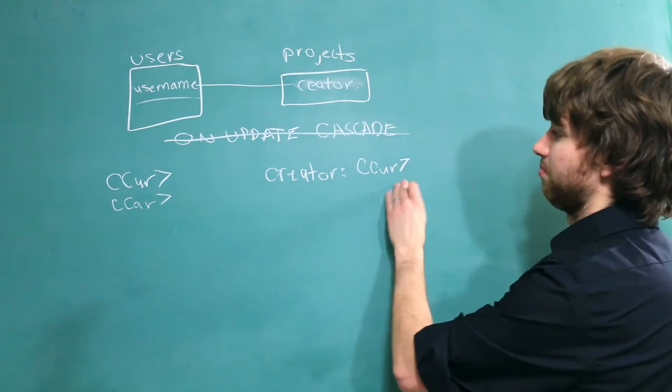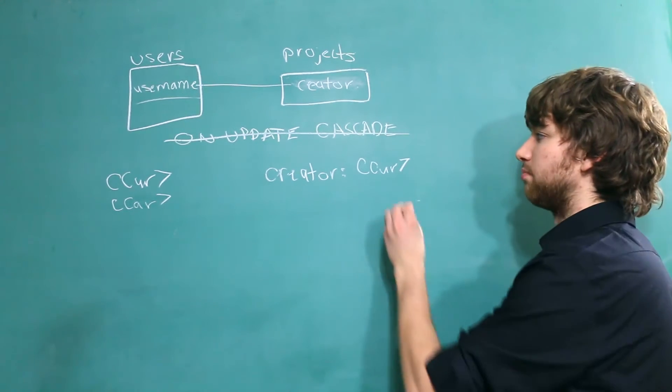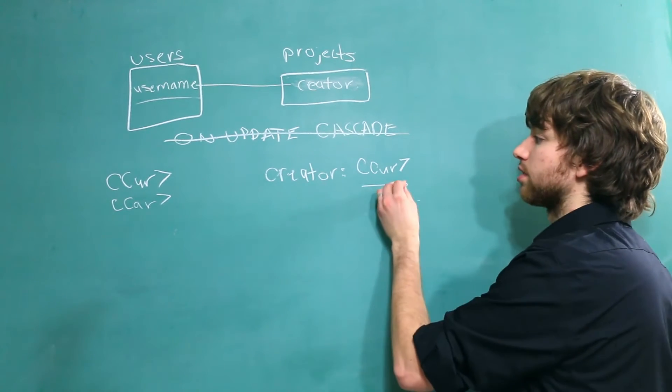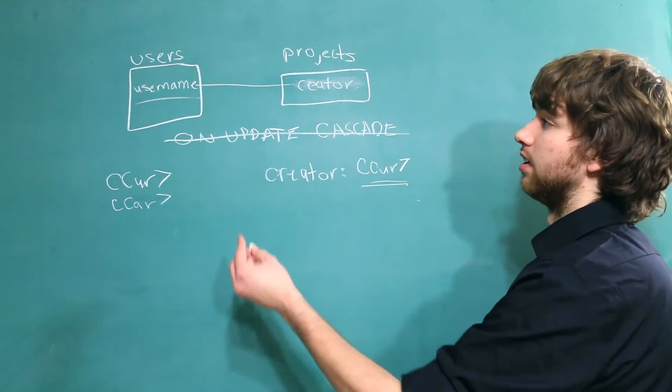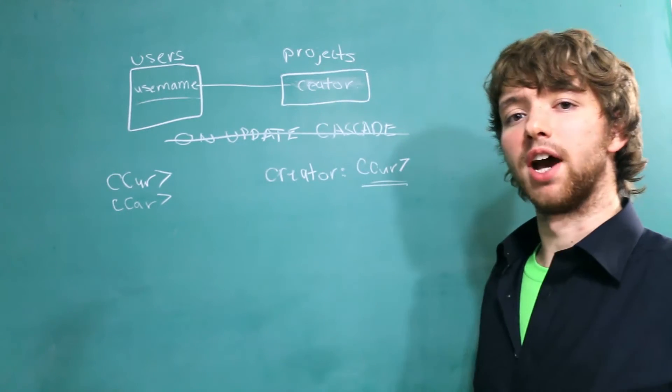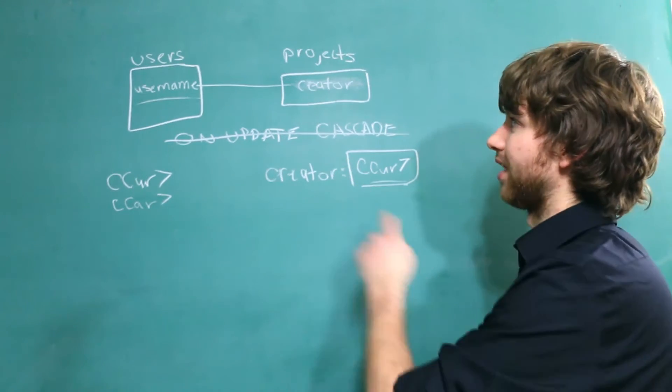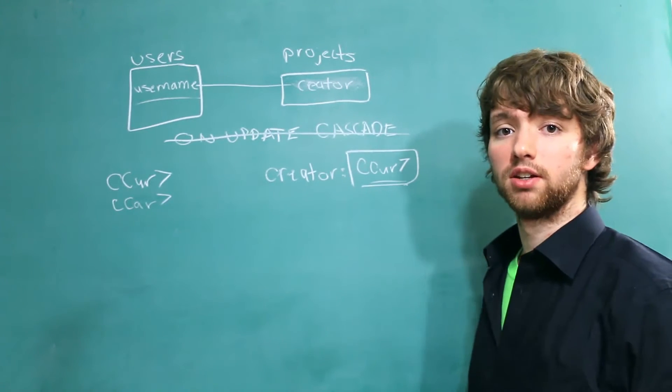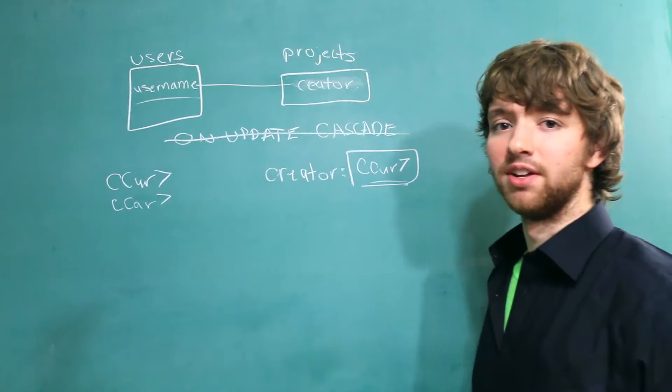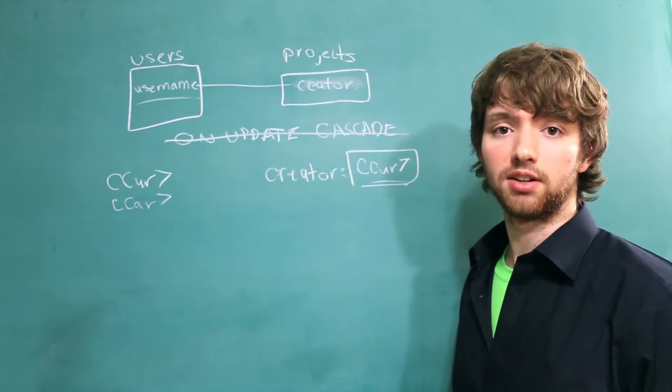But this one doesn't update. Now we have the issue that we have a project created by some mysterious user who doesn't exist, because there is no such thing as a Ccur7 inside of the users table. Even worse, there might be another guy who realizes this Ccur7 is the creator of this group or this project. And then he updates his username to Ccur7. And now he has admin rights to do whatever he wants in this project. See the problem there?